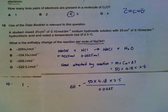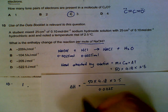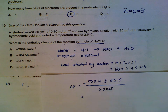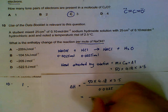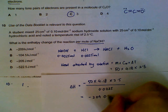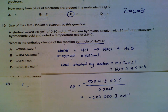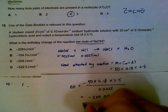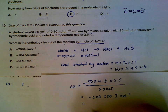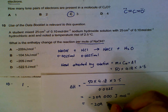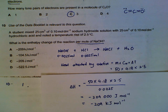Remember to put a negative sign because it is an exothermic reaction. Multiplying everything out and dividing by 0.0025, we get minus 209,000 joules per mole of sodium hydroxide. If you want to convert to kilojoules, divide by 1000. That gives the energy produced per mole of sodium hydroxide transferred to the solution.